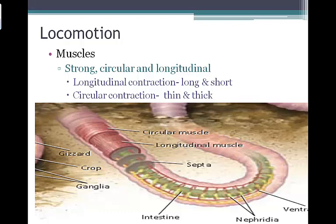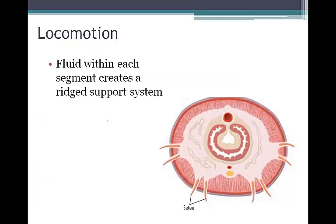The longitudinal muscles run lengthwise, and their contraction makes the worm long and short. The circular muscles are responsible for side-to-side movement. Annelids also possess setae, which are tiny bristle-like cells that push into soil and anchor the worm during movement. They extend out of the body as hair-like projections used to grip the soil. The fluid within each body segment creates the rigid support of the hydrostatic skeleton.